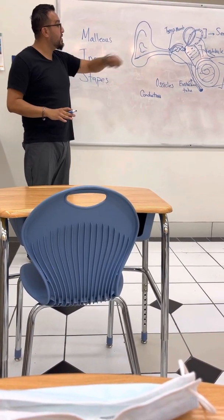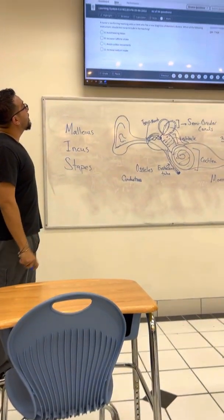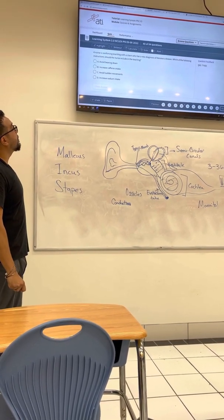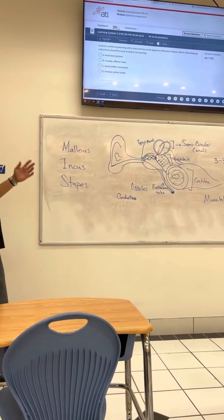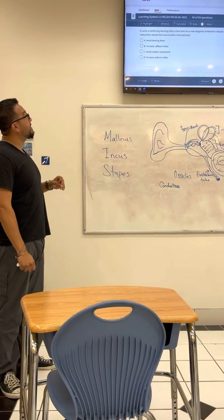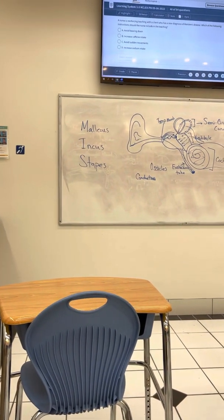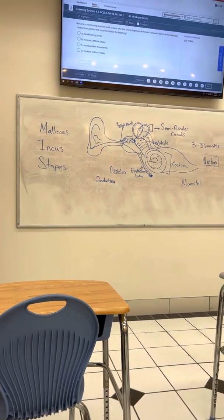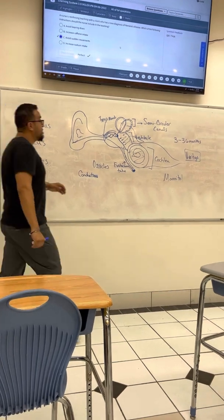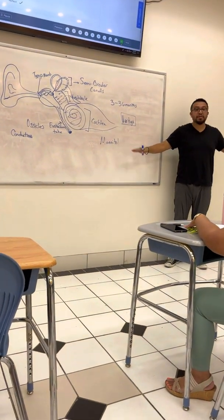That's Meniere's disease. So we can use that now to address the question. A nurse is reinforcing teaching with a client who has a new diagnosis of Meniere's disease. Which of the following instructions should the nurse include in the teaching? Is it avoid bearing down, increase caffeine intake, avoid sudden movements, or increase sodium intake? Avoid sudden movements, and that's because you understand that the main issue this patient's going to have is issues with vertigo, with their balance.